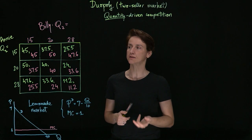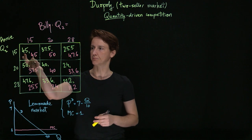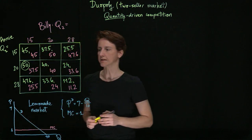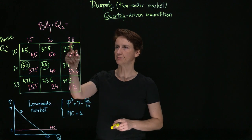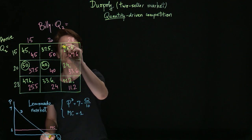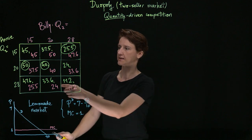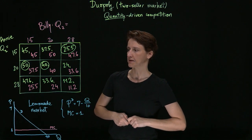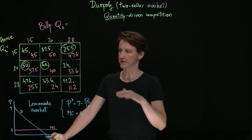Now let's analyze the game and see what the best responses are for both Annie and Billy. First, if Billy were to make 15 glasses of lemonade, then Annie is best off if she makes 20 glasses, because that is the higher payoff. If Billy makes 20, then Annie is best off also making 20. If Billy makes 28, then we would compare these three payoffs for Annie: 25.5, 24, or 11.2, and we would find that Annie is best off if she makes relatively few glasses. So she doesn't have a dominant strategy, but she does have a dominated strategy — she doesn't want to make too many glasses, because then the price would drop too much.